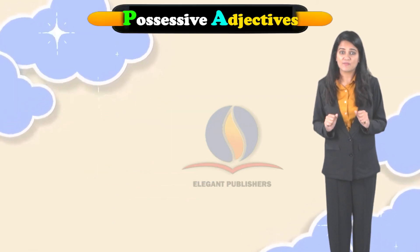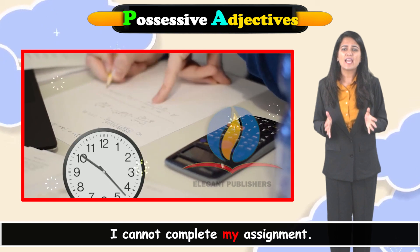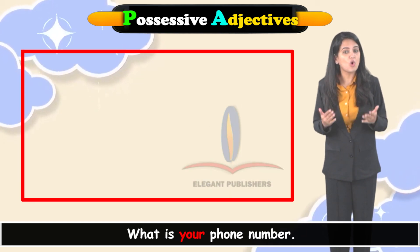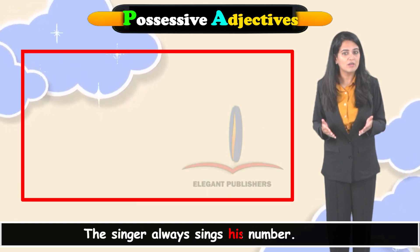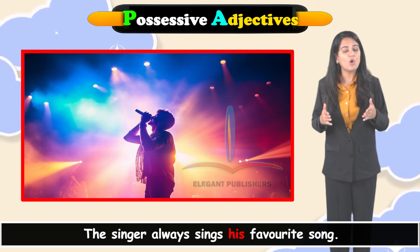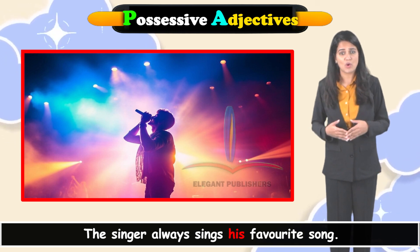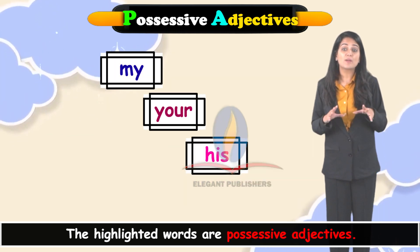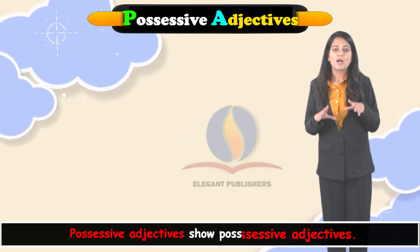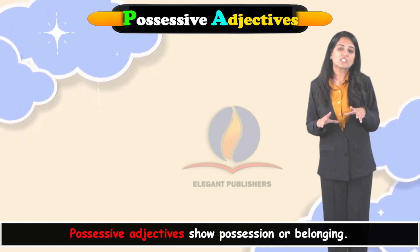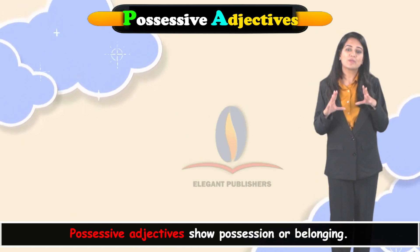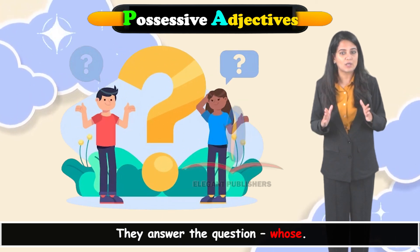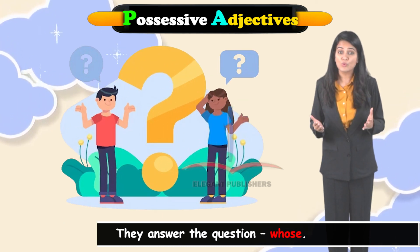Possessive adjectives. I cannot complete my assignment. What is your phone number? The singer always sings his favourite song. The highlighted words are possessive adjectives. Possessive adjectives show possession or belonging. They answer the question 'whose.'